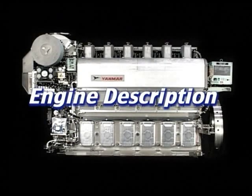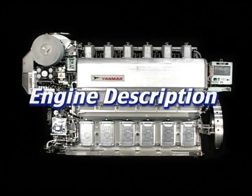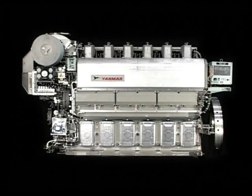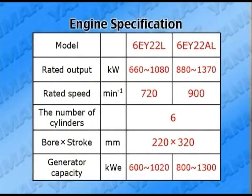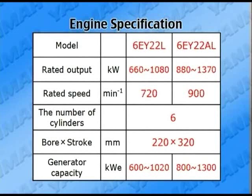I'll explain here the outline for the engine information. First of all, I'll explain the main points. There are two types in the rated speed: 720 RPM and 900 RPM. We call them accordingly 6EY22L and 6EY22AL.